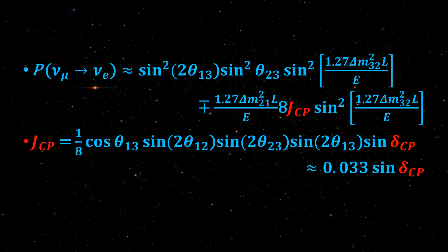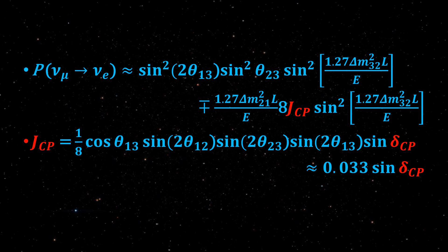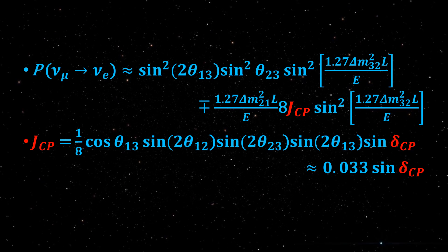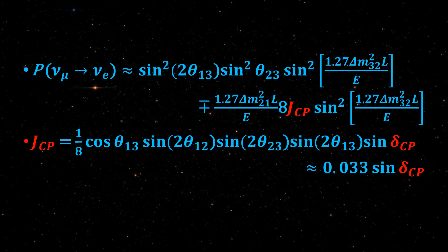Previous observations of neutrino oscillations have established that the three known neutrino flavor states, ν_e, ν_μ, and ν_τ are mixtures of three mass states, ν_1, ν_2, and ν_3.